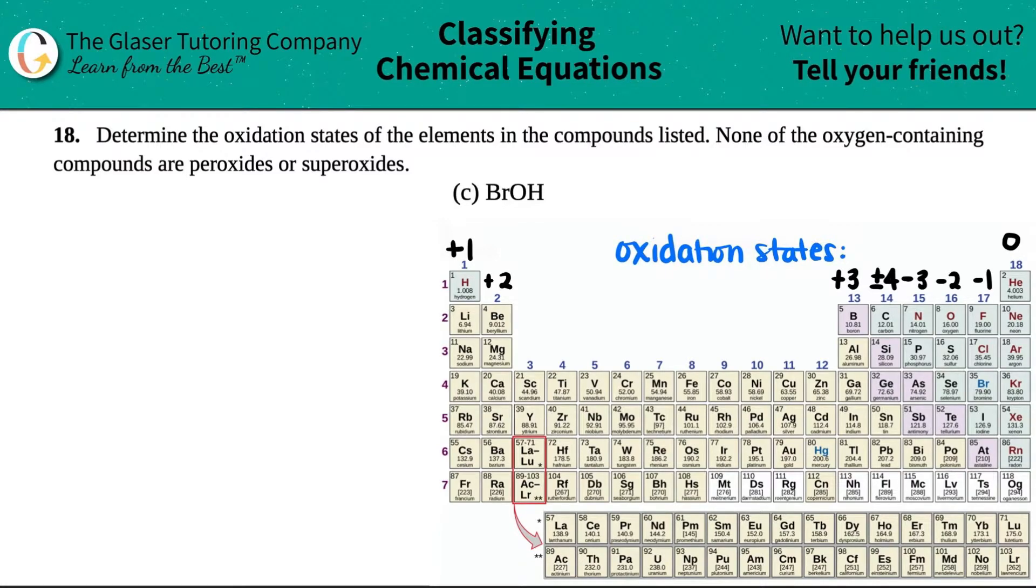Number 18. Determine the oxidation states of the elements in the compounds listed. None of the oxygen-containing compounds are peroxides or superoxides. And then we have letter C: BrOH.